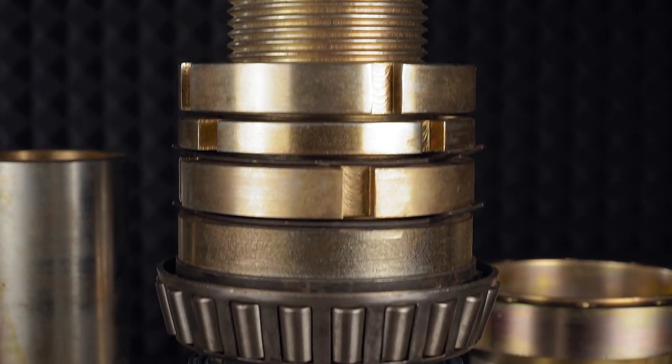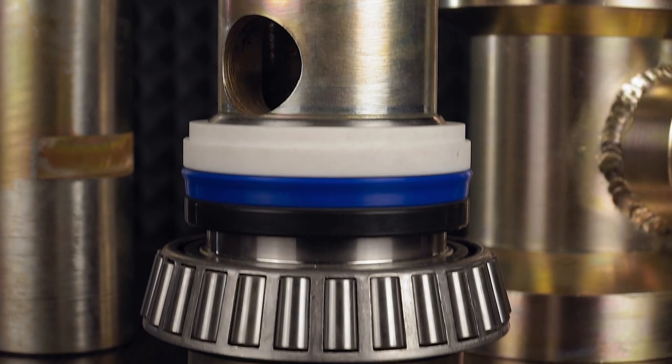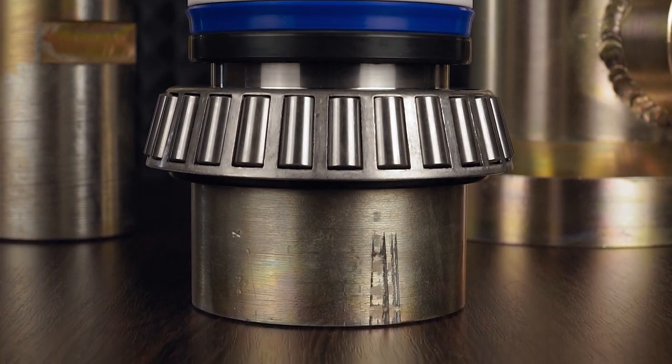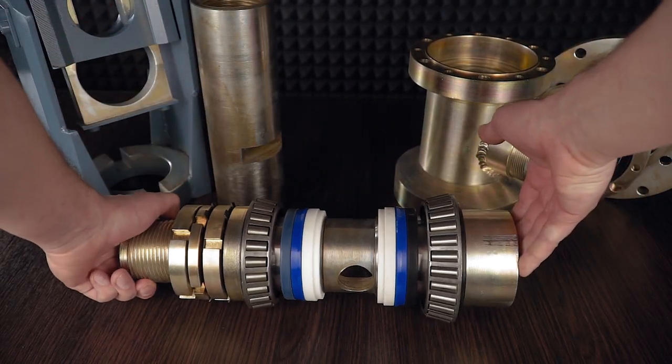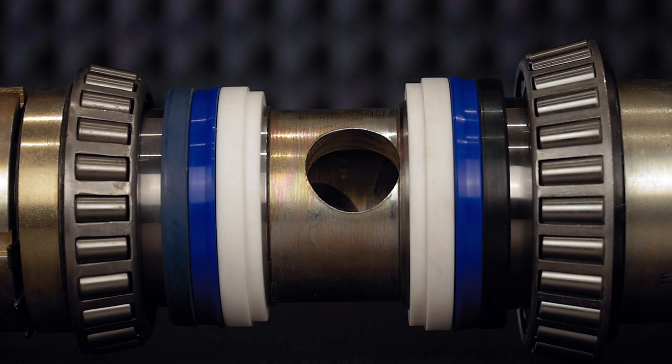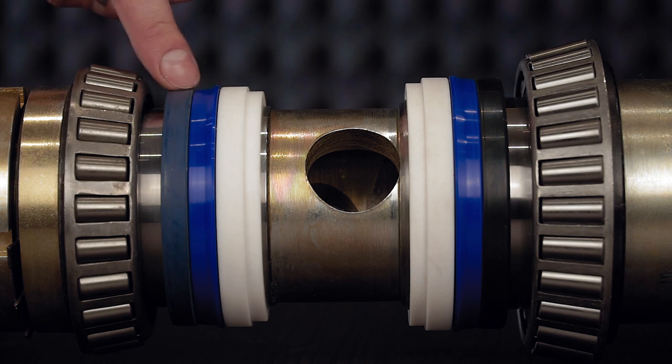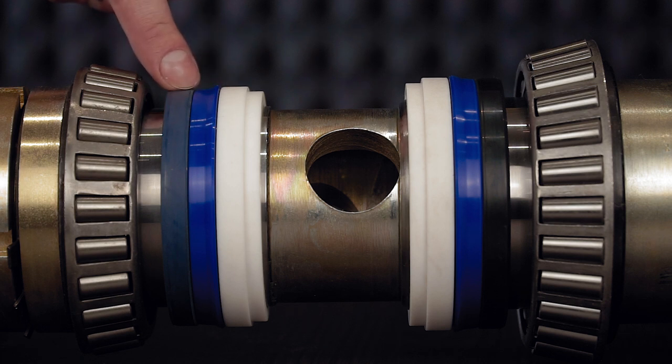Now you can see shaft with seals and bearings installed. I made it to show how they are placed when the swivel is assembled. To ensure tightness are used four sealing barriers. These are fluoroplastic sleeves, hydraulic polyurethane cuffs and rubber reinforced cuffs. This is how it looks in section.